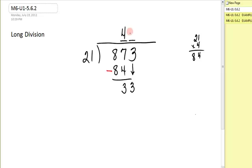21 goes into 33 just one time. If I had not known the answer to that, I would look at just the 2 and the 3 and say, how many times does 2 go into 3? That would help me guess. 1 times 21 is 21, subtract again, and I get a remainder of 12.